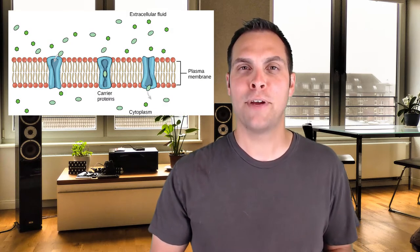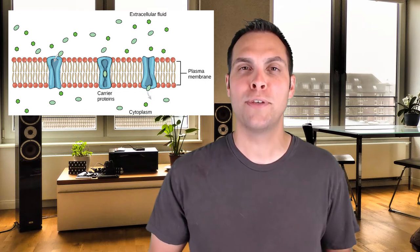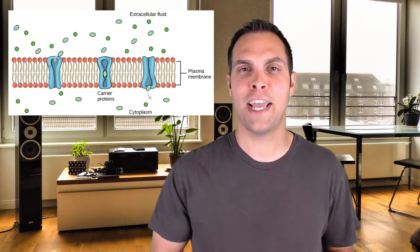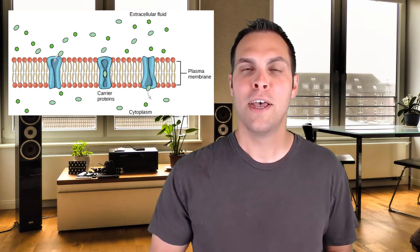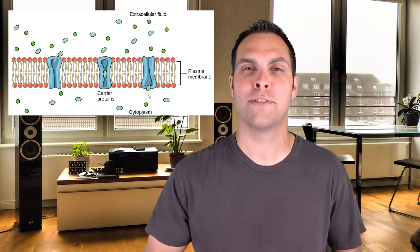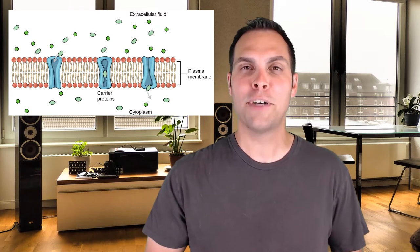But what if something is too big or too hydrophilic and isn't able to make it across the plasma membrane, but is still going down its concentration gradient? Can that still come in through passive transport? Yes. A lot of people think passive transport can't involve proteins, but actually the majority of things that enter your cell through passive transport do so through facilitated diffusion, which is simply passive transport that utilizes dedicated transport proteins.